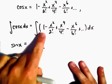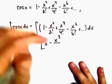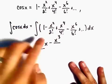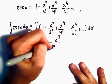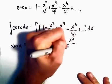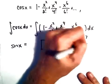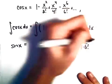On the right side the antiderivative of 1 is just x. Then we'll get x to the 3rd. Notice we'll get 3 times 2 factorial, so let's write that. And then we'll get x to the 5th over 5 times 4 factorial minus x to the 7th over 7 times 6 factorial, etc.